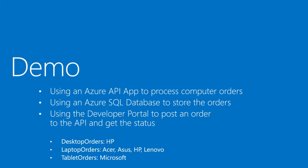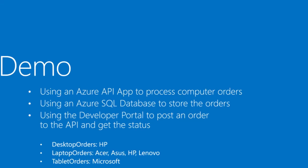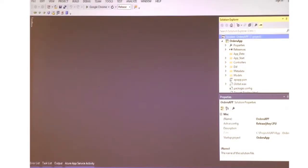This is the demo I'm going to do. First, I'm going to show you how to create an API. Then I'm going to use SQL database to store the data. Then I'm going to call the API from the developer portal. In this case, I'm processing several computer orders: desktop orders, laptop orders, and tablet orders. What you're seeing here is an API app — it isn't really different from others.